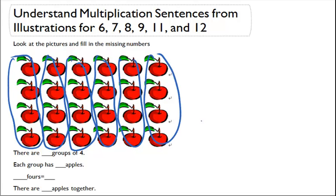So now we can say how many groups of four we have. One, two, three, four, five, six. So there are six groups of four. Great.